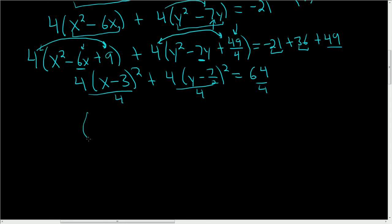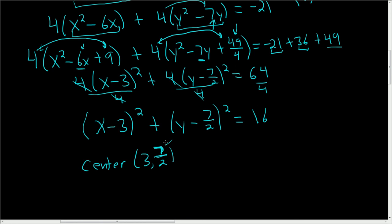We end up with (x - 3)² plus (y - 7/2)² = 16. So the center in this case would be (3, 7/2), and the radius is the square root of 16, which is 4. I hope this helps.